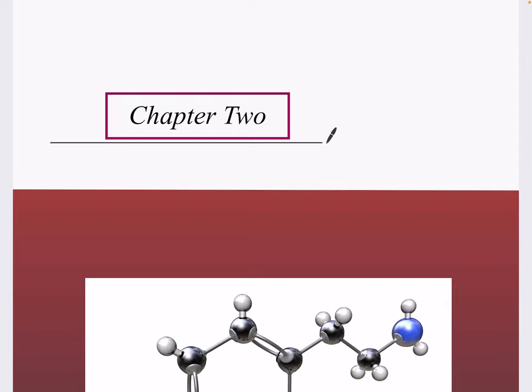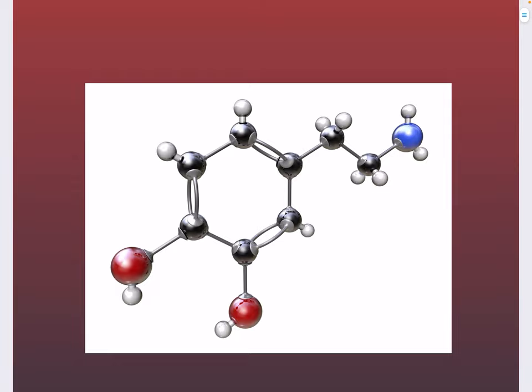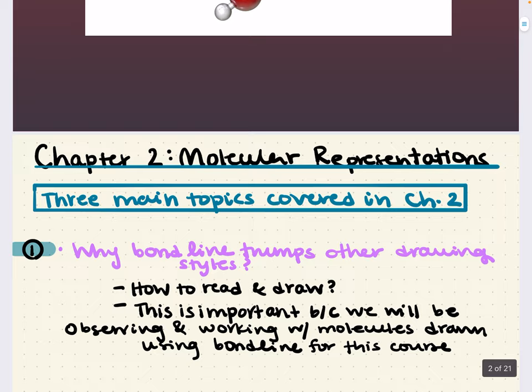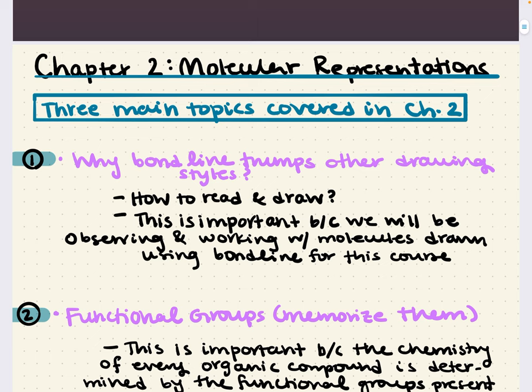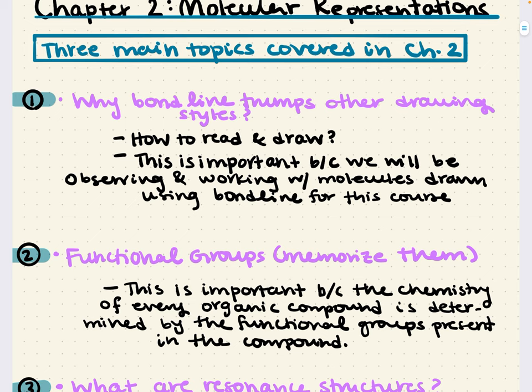Hello everybody, my name is Imanin Essidi. Welcome back to my YouTube channel. Today we're going to cover chapter 2 of the David Klein Organic Chemistry textbook. In this session, we're going to discuss three main topics. We will come across different drawing styles in our discussion of how to efficiently draw molecules and compounds. We'll learn what bondline is and how to read and write in bondline — a faster and easier way to draw and interpret molecules — starting now and for the rest of organic chemistry.